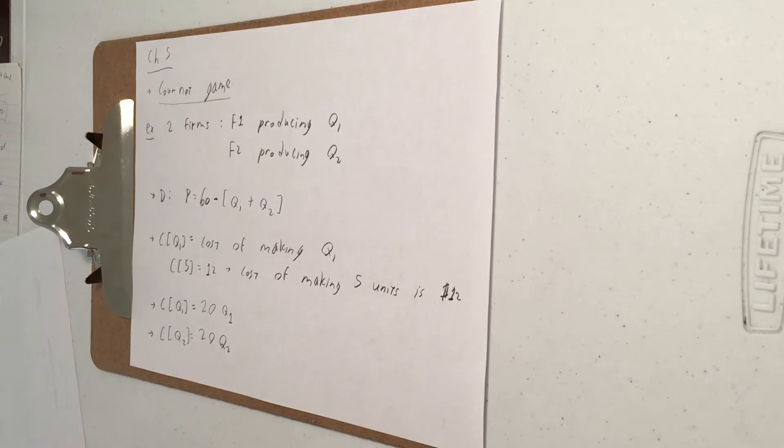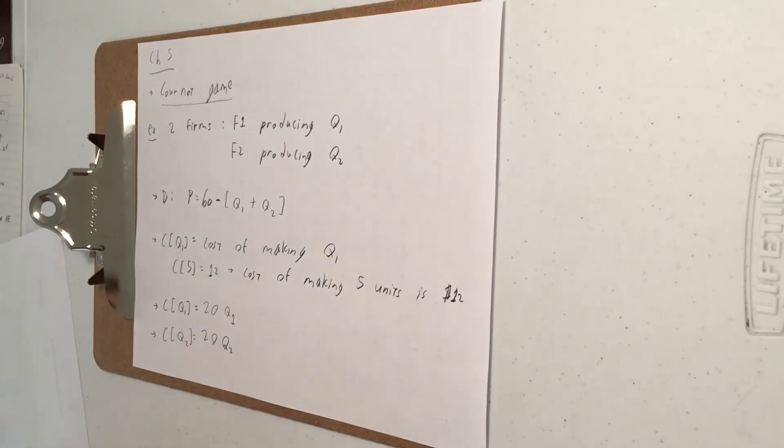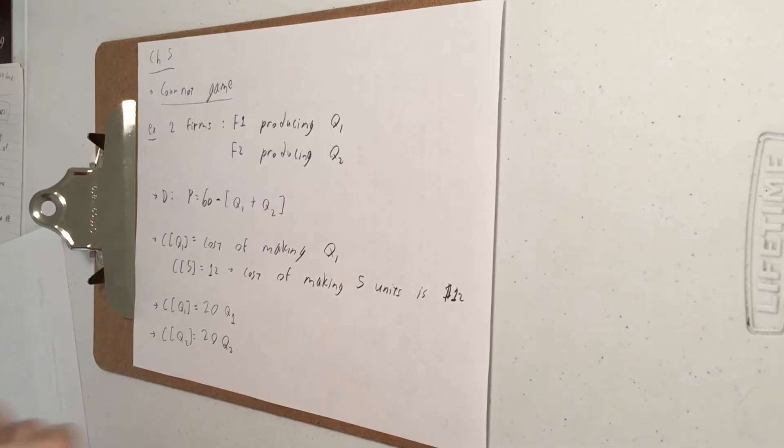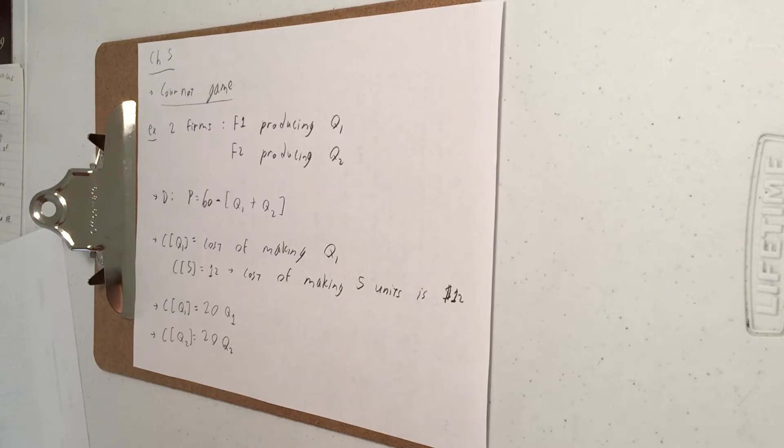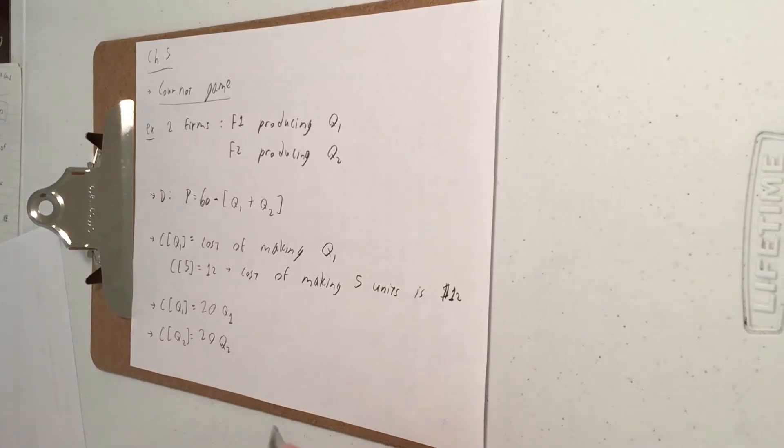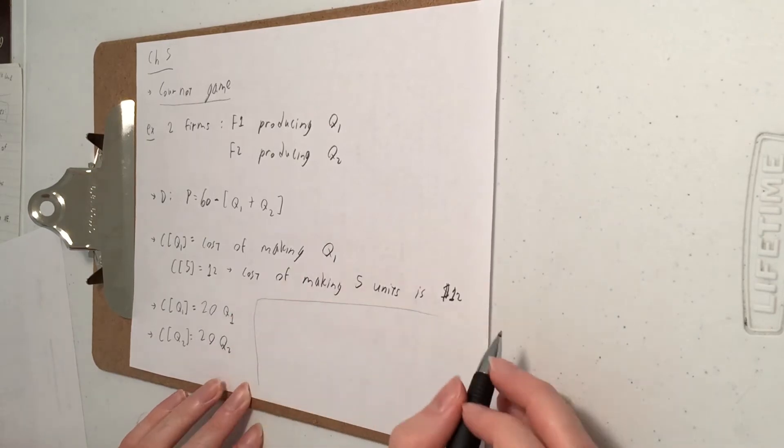So the way the Cournot game works is that the price that both firms charge will be determined by demand here. The firms pick their Qs simultaneously and Q is continuous.